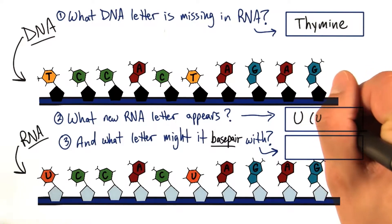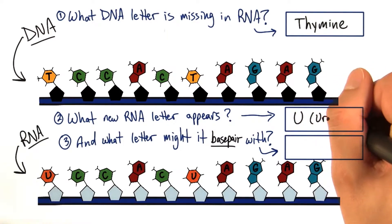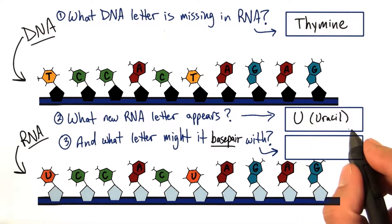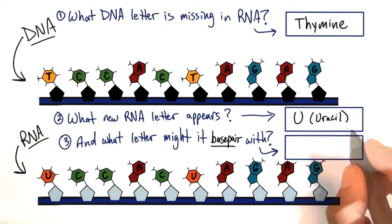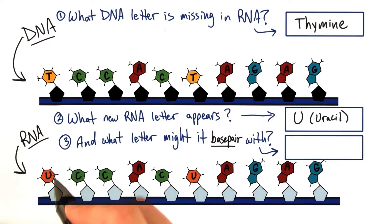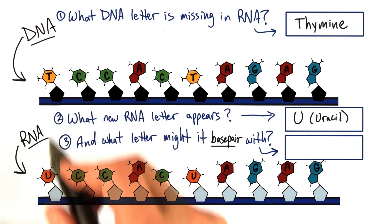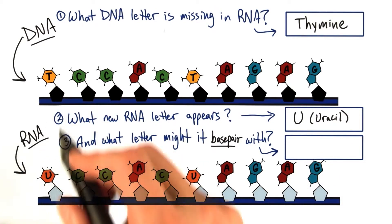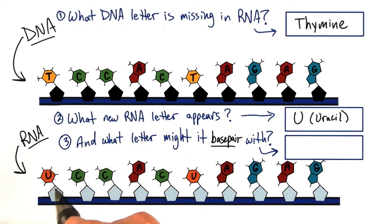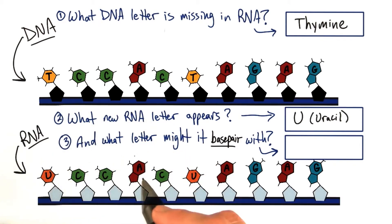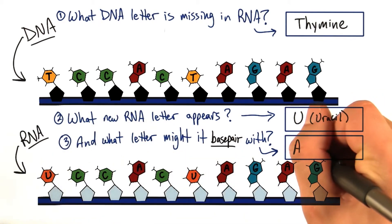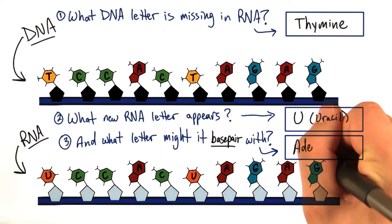And U stands for uracil, which we'll learn about a bit more in a second. And since U is replacing T, we might assume, based on the similar structure as well, that it base pairs with A, or adenine.